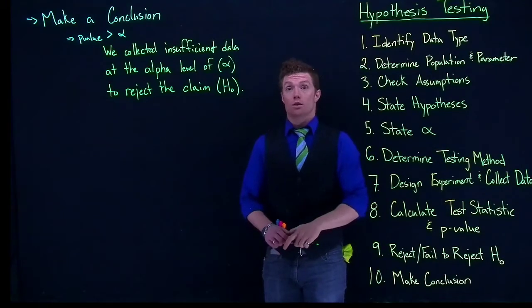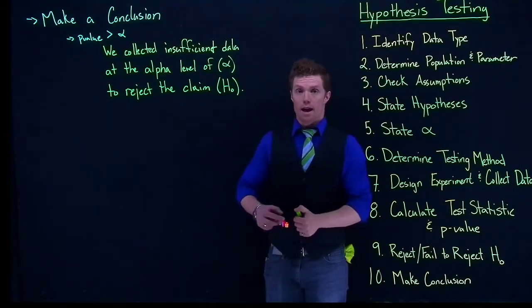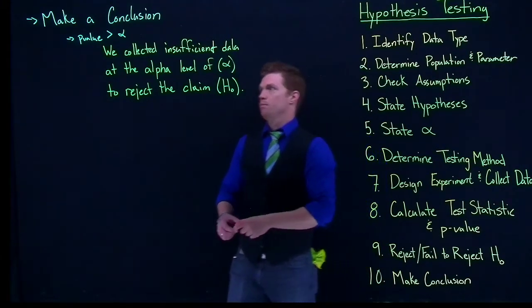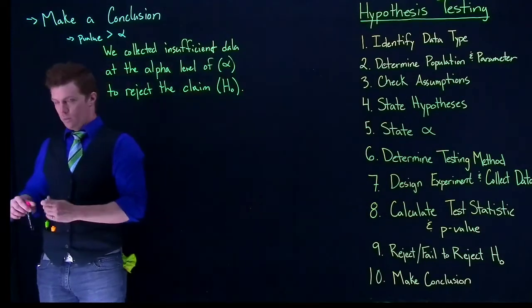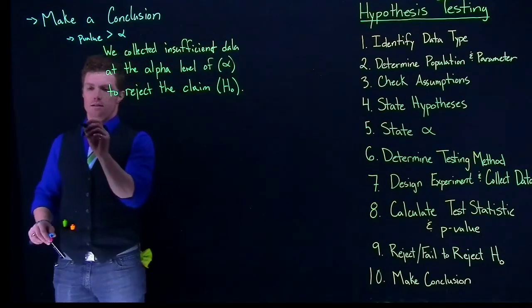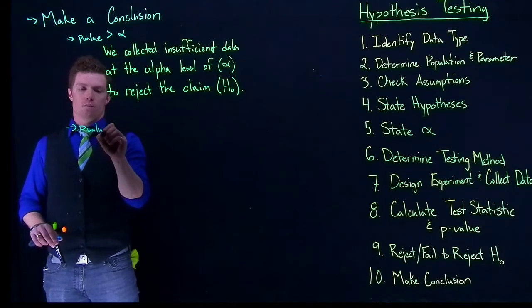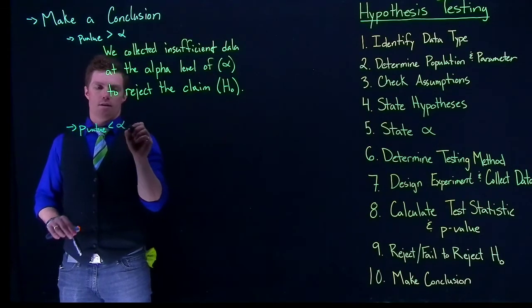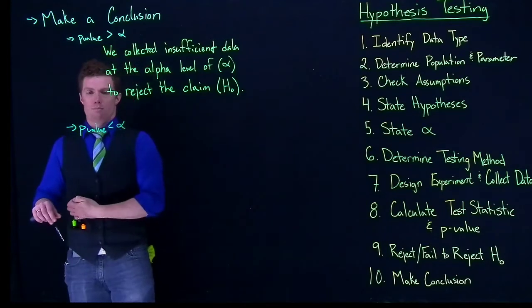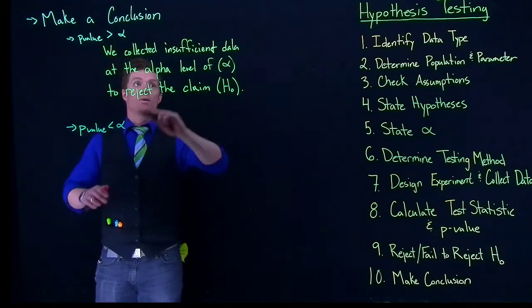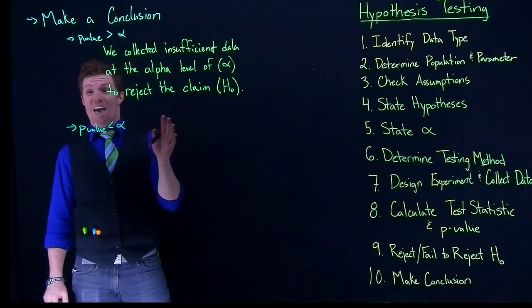But if we do reject the null hypothesis, we have to take it a step further. All right, so here we go. We'll say that down here, that our p-value was less than alpha. If that happens, we can almost write this exact same thing, but add some more stuff on.